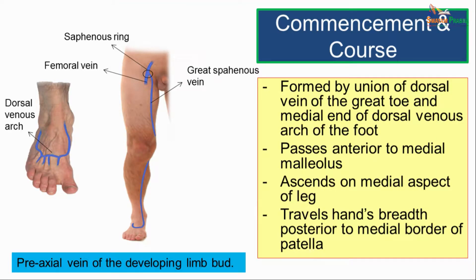The great saphenous vein is the pre-axial vein of the developing limb bud and it is the longest superficial vein in the body. It is formed by the union of the dorsal vein of the great toe and the medial end of the dorsal venous arch. This picture shows us the dorsal venous arch and the formation of the great saphenous vein.